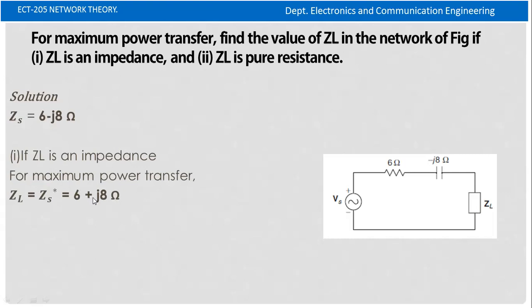Therefore ZL equals 6 plus j8 ohm. That is the value of ZL — the conjugate of the source impedance.